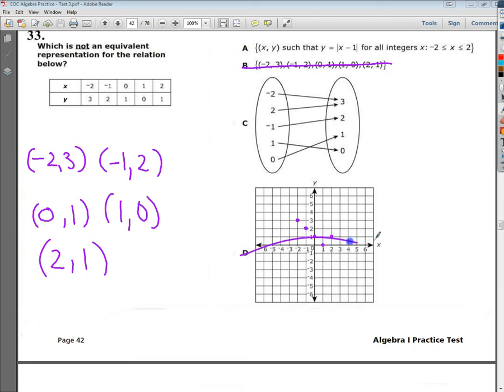So d is not the answer. I'm going to see if c matches up. So it tells me that negative 2 goes to 3, and 2 goes to 3. Well, no, that's not true. Negative 1 goes to 2, so that checks out. Perfect. Negative 2 goes to 3, but this says 2 goes to 3. It doesn't go to 1. If the line was down here, then yeah, I'd be all about this answer, but it's not.